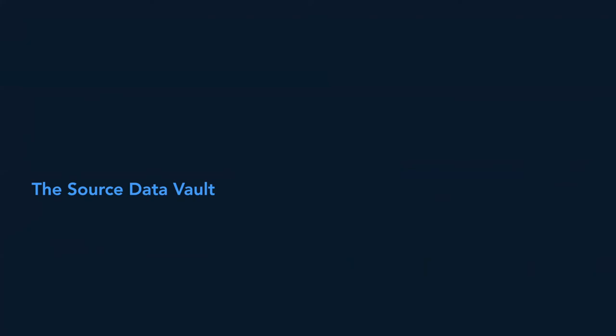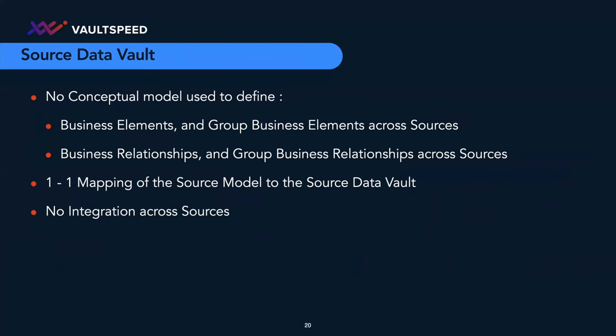One possible way of working — not the right way — is the source-driven approach: you just bring in the source as-is. There are no business elements and no grouping of business elements across sources, neither for the relationships. They are not defined and not grouped. There is a one-to-one mapping of the source model to the Data Vault, and there is no integration across sources because if you build a source Data Vault, you are loading stovepipes. It's of course the fastest way to get your data into a Data Vault system, but is this the best way?